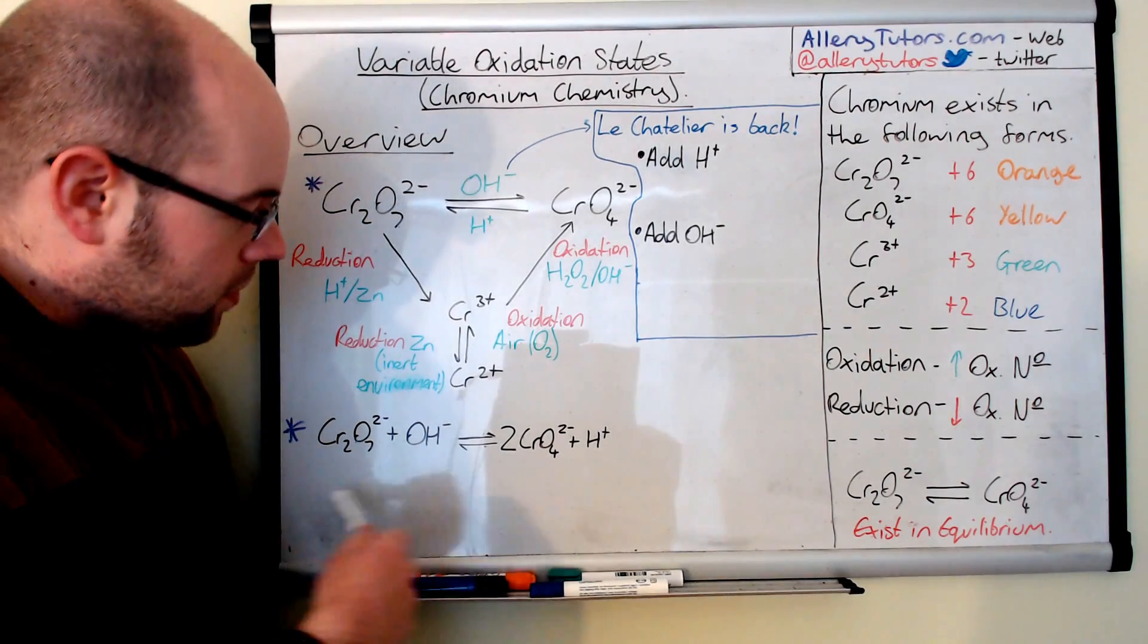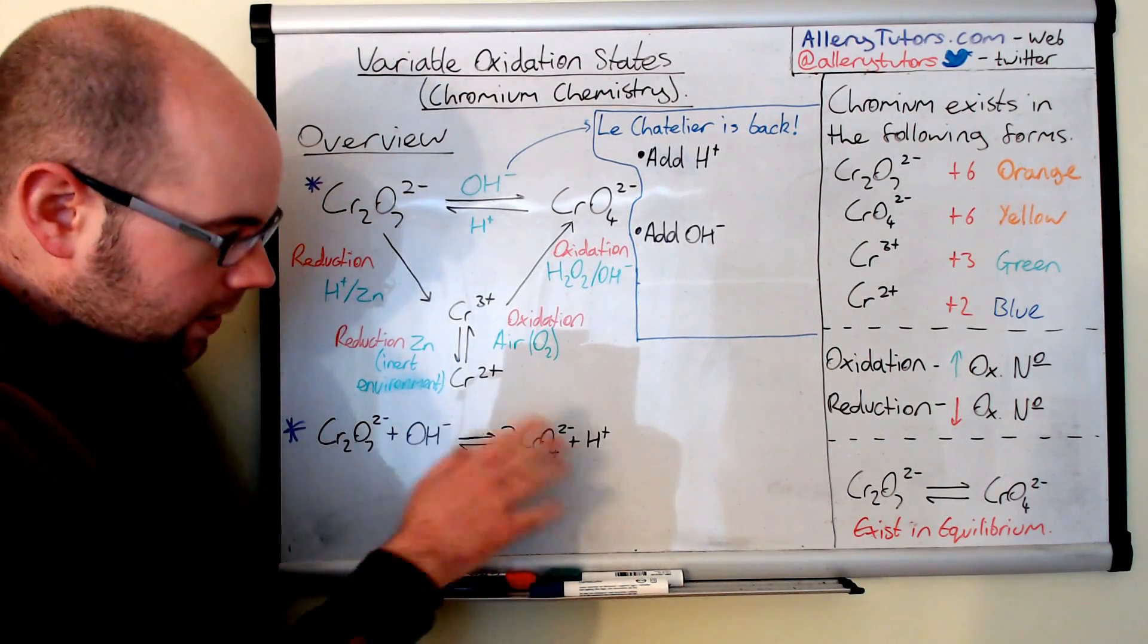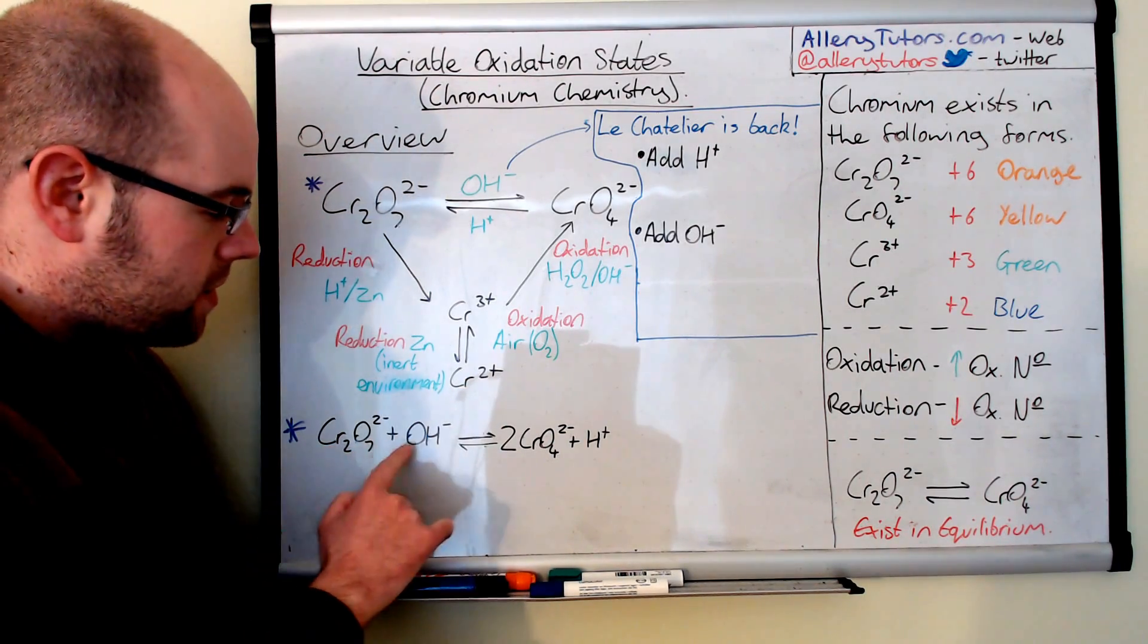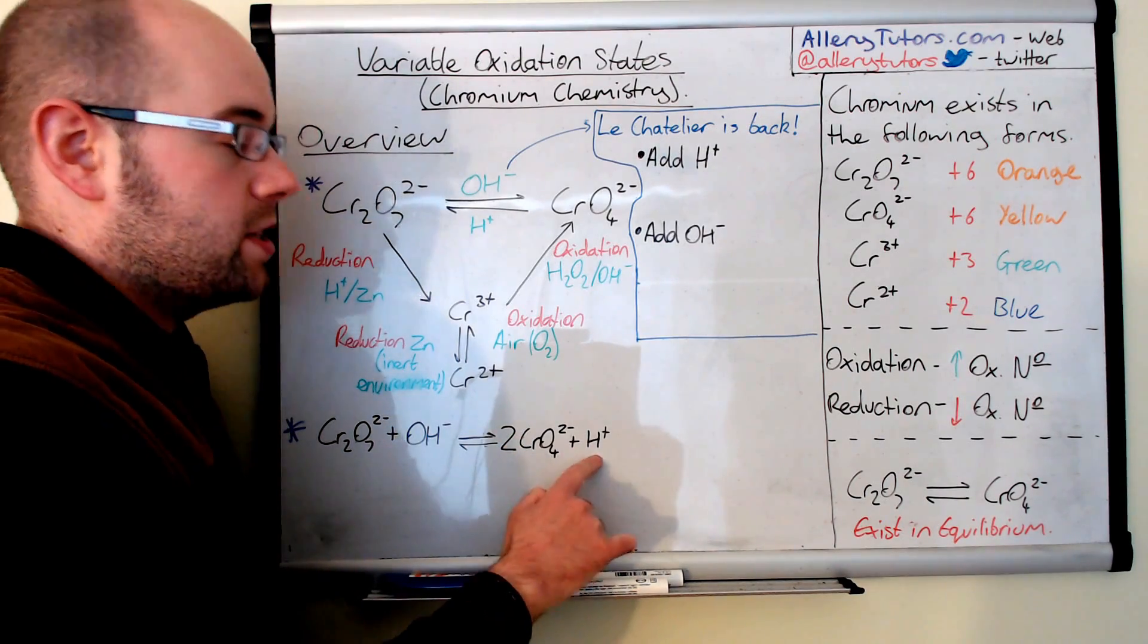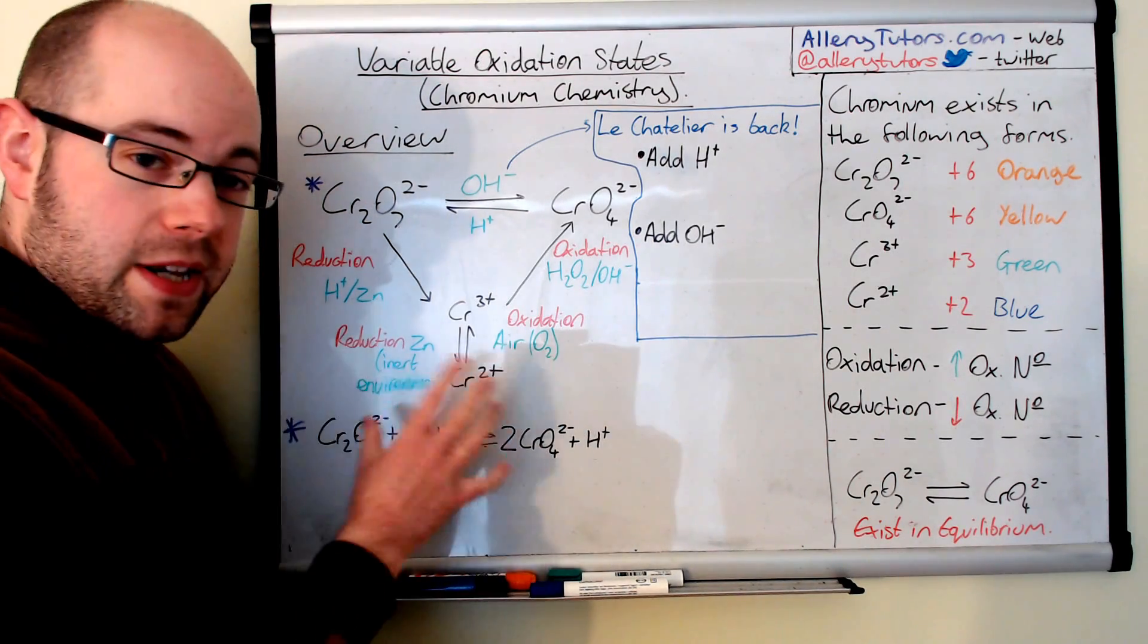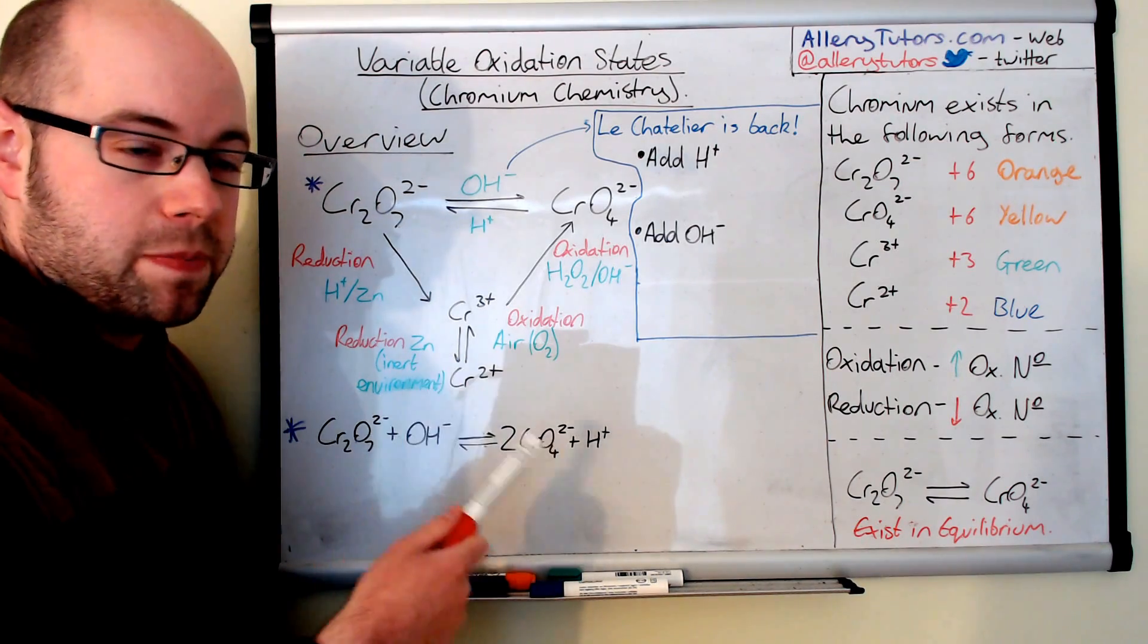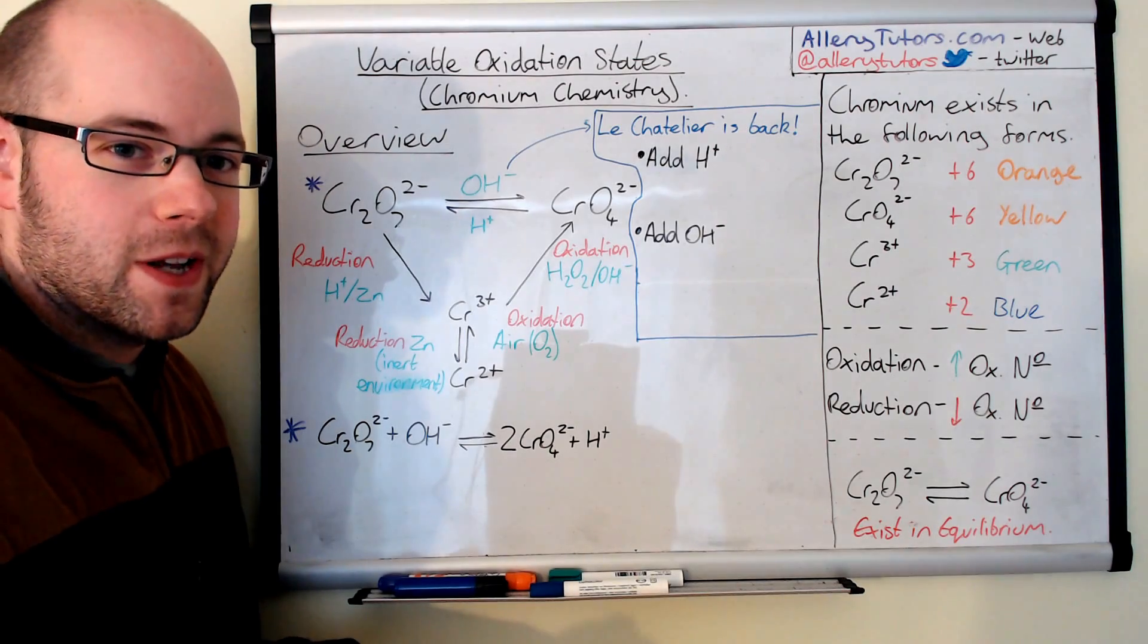So I've got the reaction written down here in a reaction form an ionic equation. So you can see here we've got the dichromate reacts with hydroxide ions and it's in equilibrium with chromate and H⁺. Now this obviously has an effect depending on the pH that we put this in will depend on what colour of the solution we get. And this is where Le Chatelier's principle comes in.